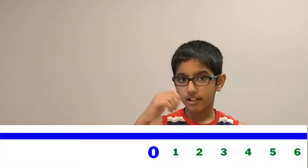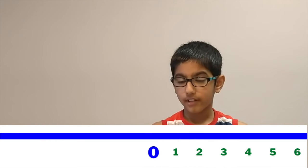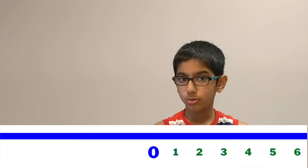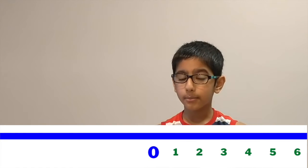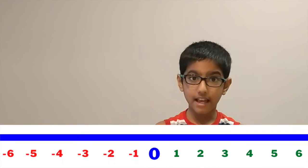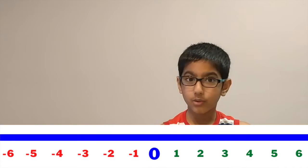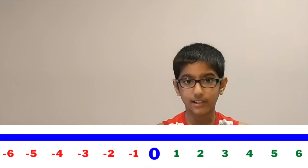All the numbers on the right side of zero will be positive numbers — one, two, three, four, and so on. All the numbers on the left will be negative numbers — minus one, minus two, minus three, and so on.